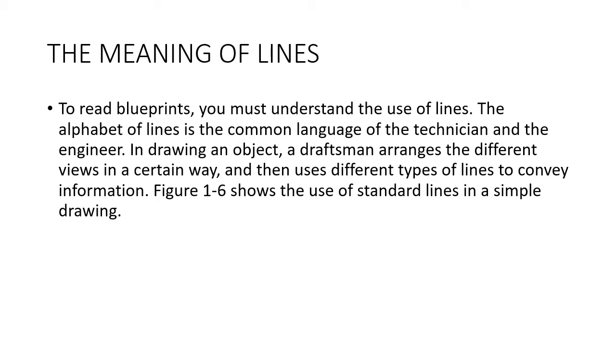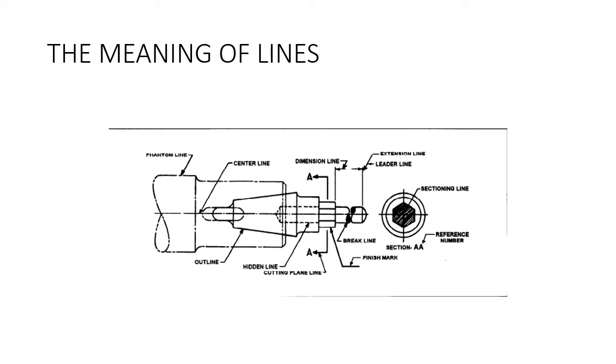All right, we're going to talk about the meaning of lines. To read blueprints, you must understand the use of lines. The alphabet of lines is the common language of the technician and the engineer. In drawing an object, a draftsman arranges different views in a certain way and then uses different types of lines to convey information. So we're going to take a look at some of these lines. So here we've got phantom lines, center lines, outlines, dimension lines, leader lines, section lines. We've got reference numbers on this thing. We've got cutting plane lines. We've got all kinds of stuff. So if you know how to read these lines and you understand the alphabet, then reading a drawing isn't too bad. But it's understanding these five or six main types of lines that is the difficult thing for getting started with reading blueprints.